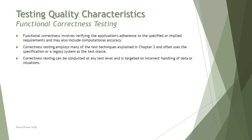The first topic in this segment is 4.2.1: Functional Correctness Testing. Functional correctness testing involves verifying the application's adherence to specified or implied requirements and may also include computational accuracy. Correctness means: what feature were you trying to implement and have you correctly implemented it? We verify that what the requirement specified has been implemented, using test techniques to check those specifications. For example, there's a text field — does it work as a text field, or does it have special features making it a special field requiring different user actions?